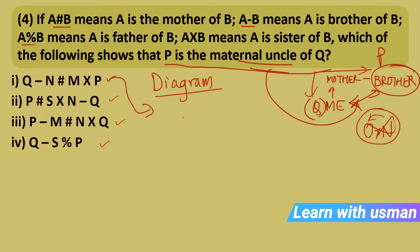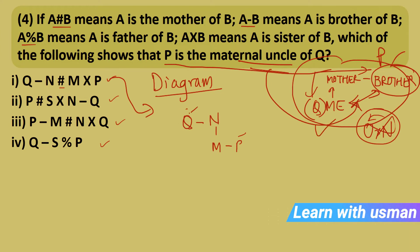Option 1: Q−N means Q is brother of N; N#M means N is mother of M; M×P means M is sister of P. Drawing this, the uncle should be at a higher level than the nephew, but here P ends up at a lower level than Q — so this is not the answer. Cancel option 1.